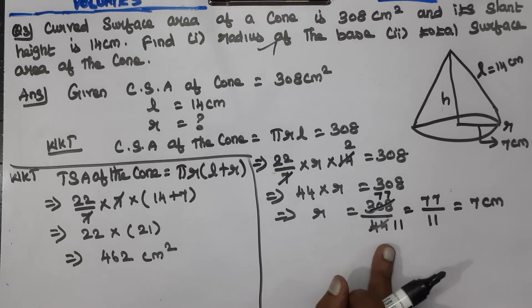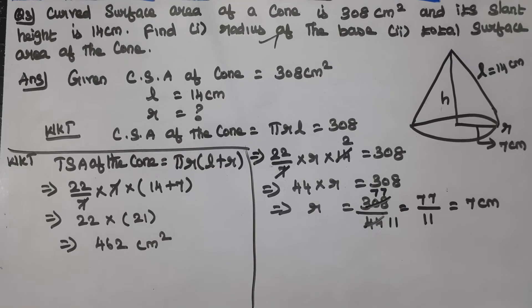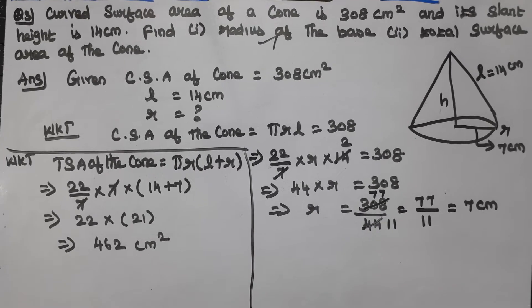Total surface area answer is 462 cm². Radius of the given cone is 7 cm. Dear students, those are the answers for Question 3.